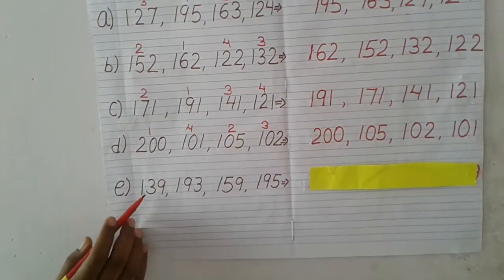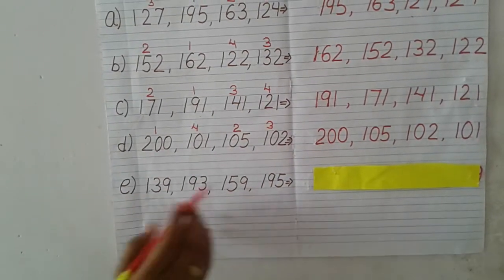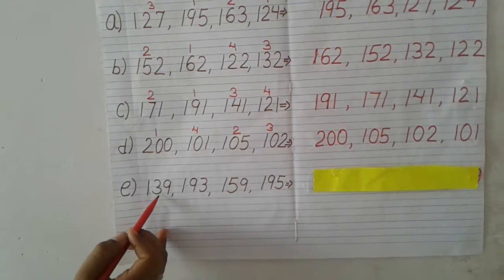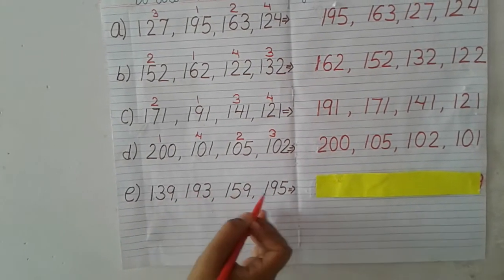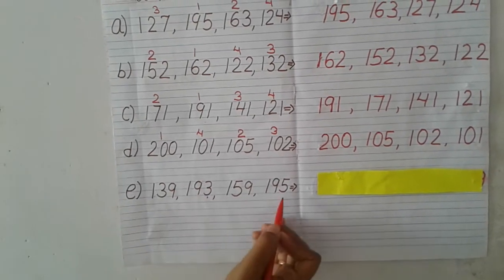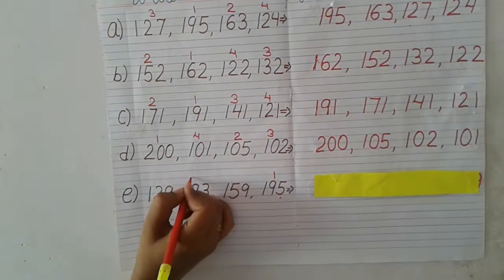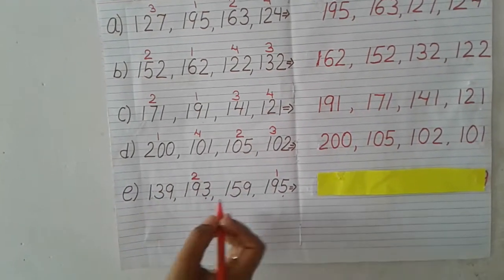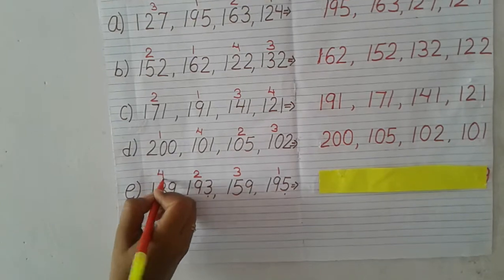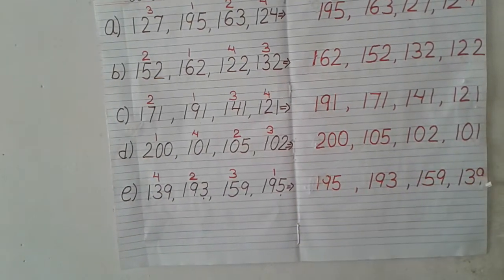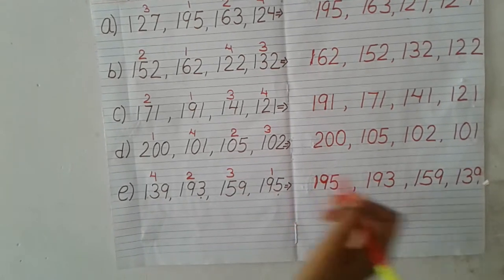The last question: 139, 193, 159, 195. We compare the hundreds place — all are 1. Tens place: 3, 9, 5, 9 — we have two 9s. So we compare the ones place for 193 and 195: 3 and 5. Since 5 is bigger, 195 is first, then 193 is second. For the remaining, the tens place has 5, so 159 is third. Last is 139. The answer is: 195, 193, 159, 139.